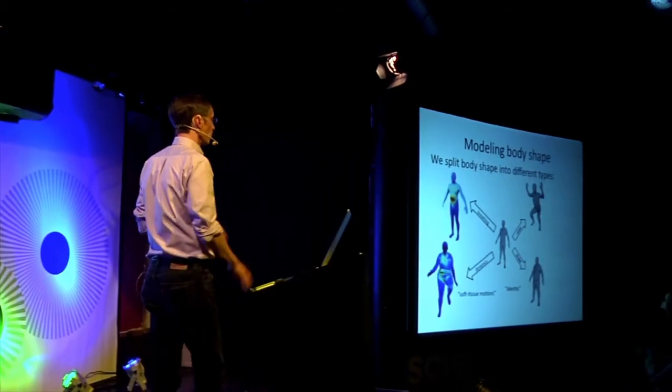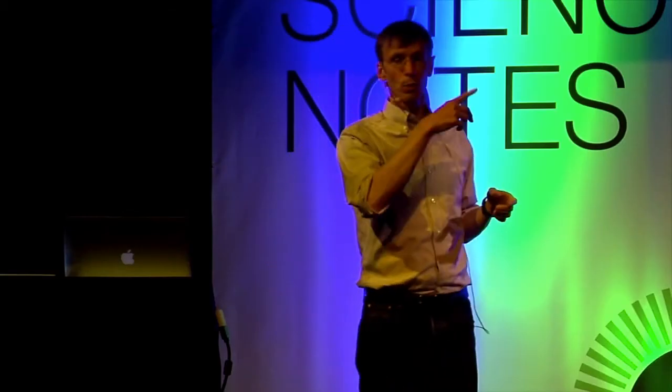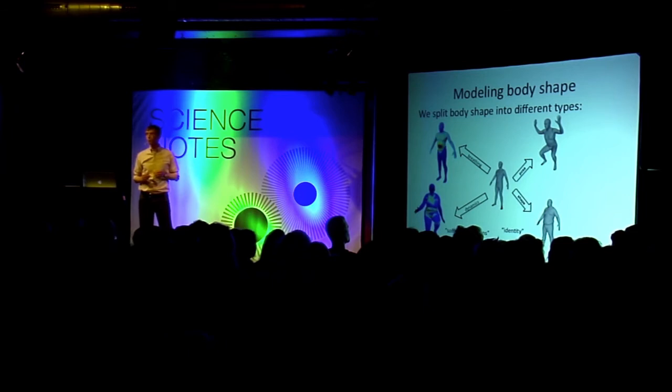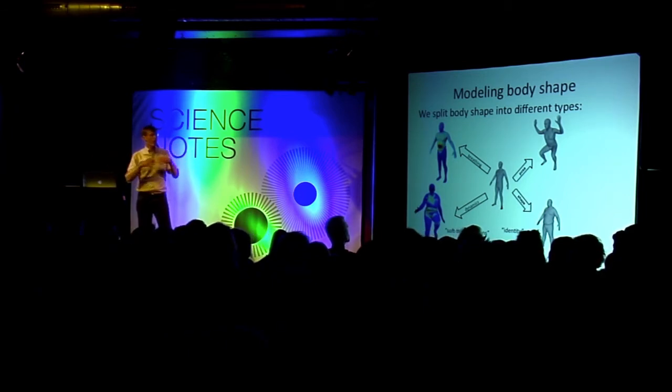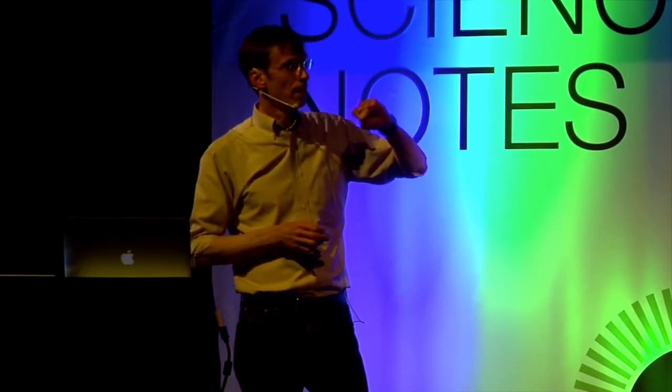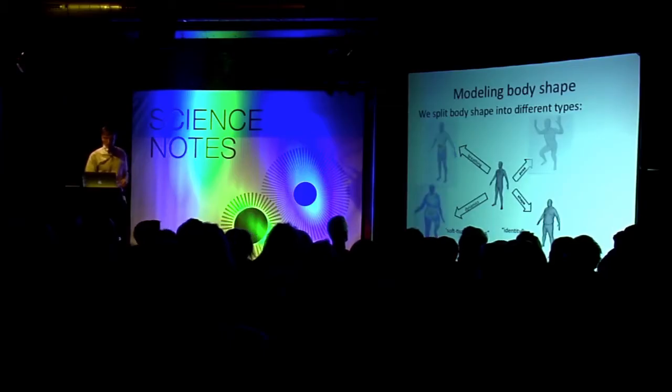And what we do is we actually split up the kinds of deformations that can happen to the body into several different causes. The main ones being your identity, we all have different body shapes. Your pose, which has a couple of components. The rigid rotation of the body parts and the soft tissue deformation that goes along with that. Muscle bulging, for example. And then the dynamics of soft tissue motion. And finally, things like breathing or aging or pregnancy. These are other effects.